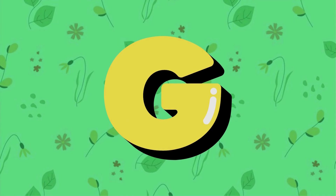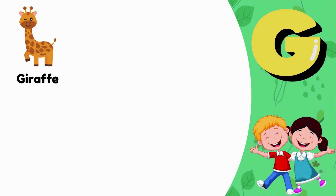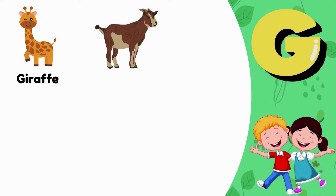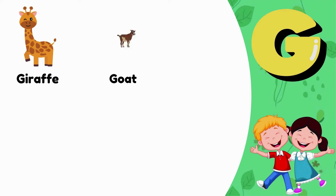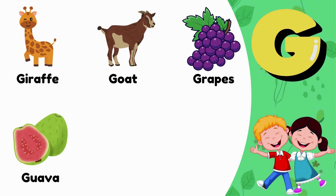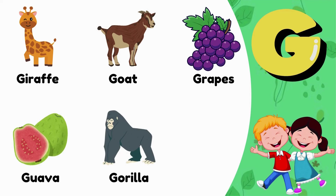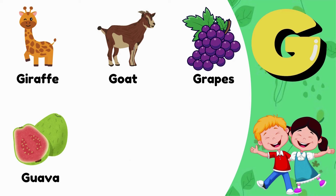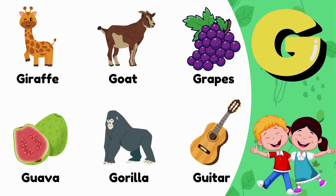G. G is for Giraffe. G is for Goat. G is for Grapes. G is for Guava. G is for Gorilla. G is for Guitar.